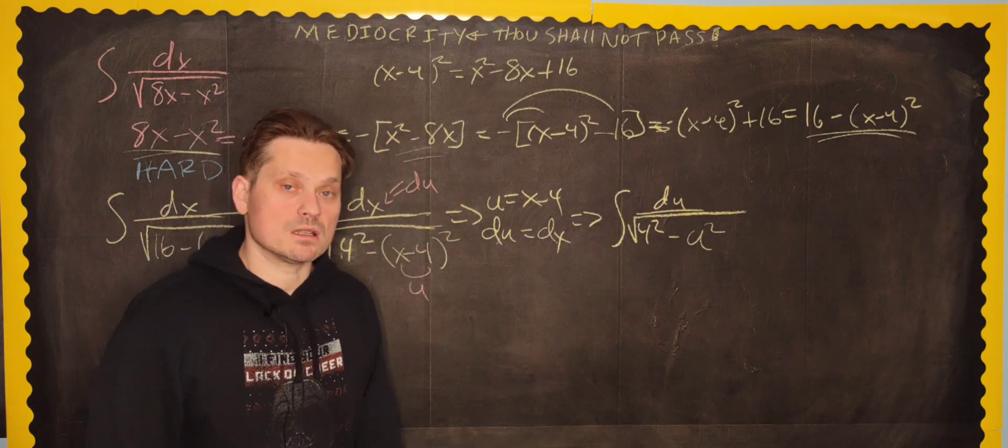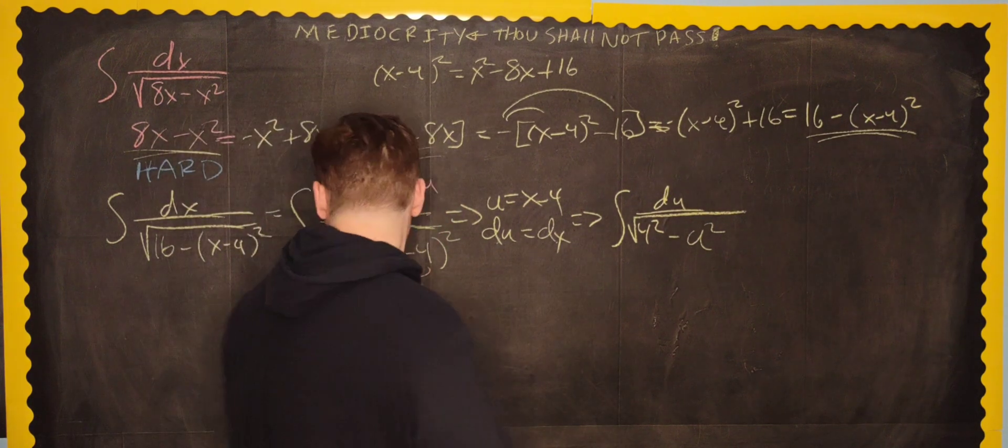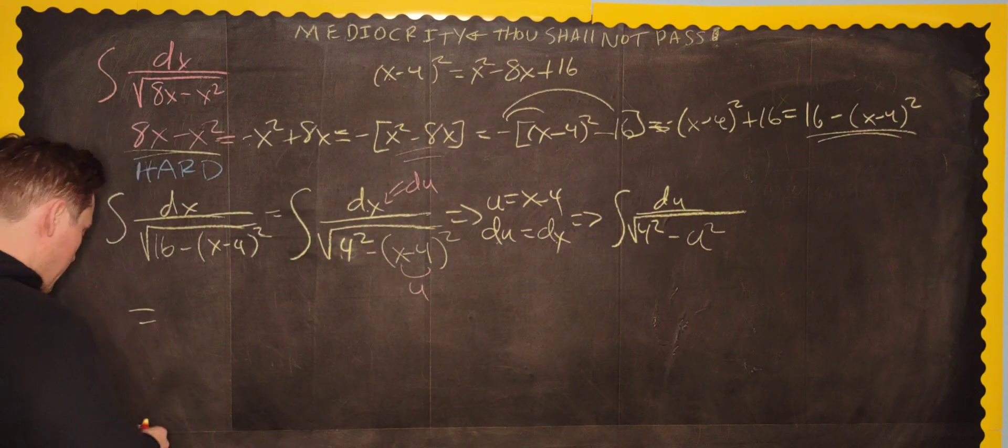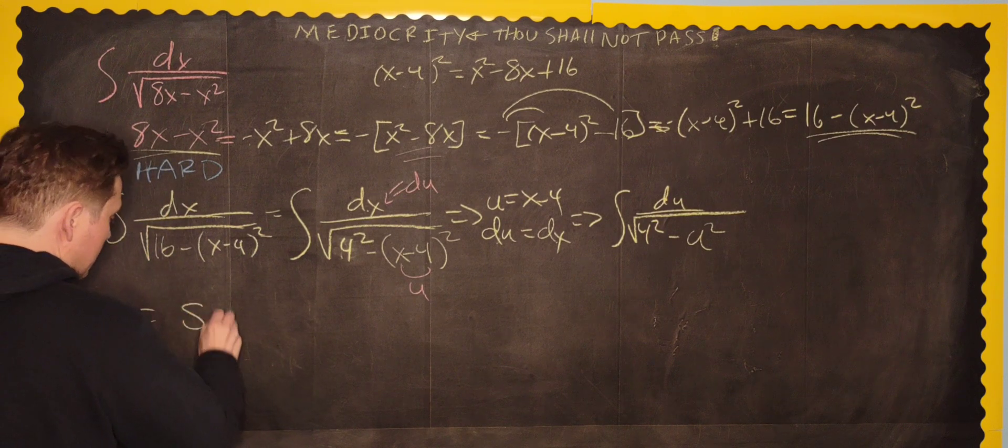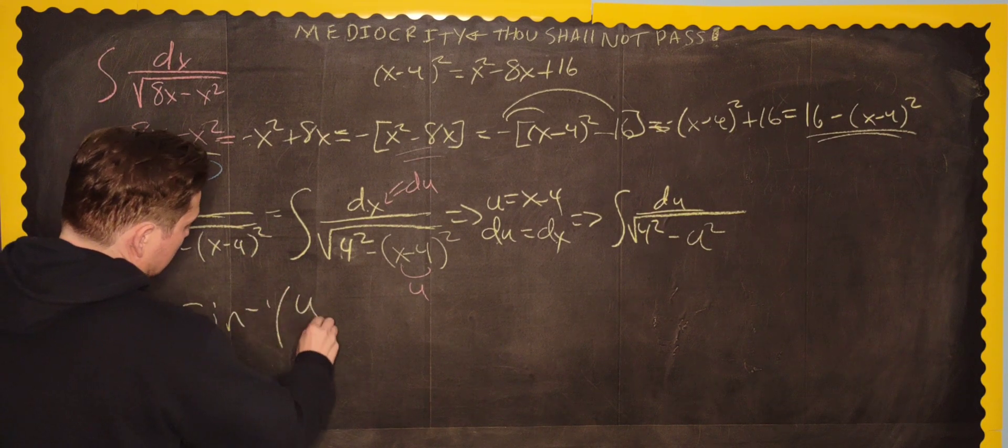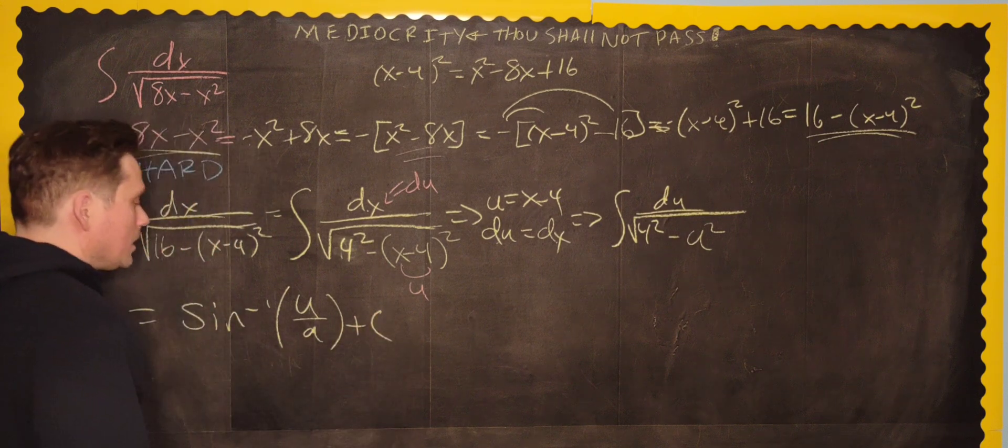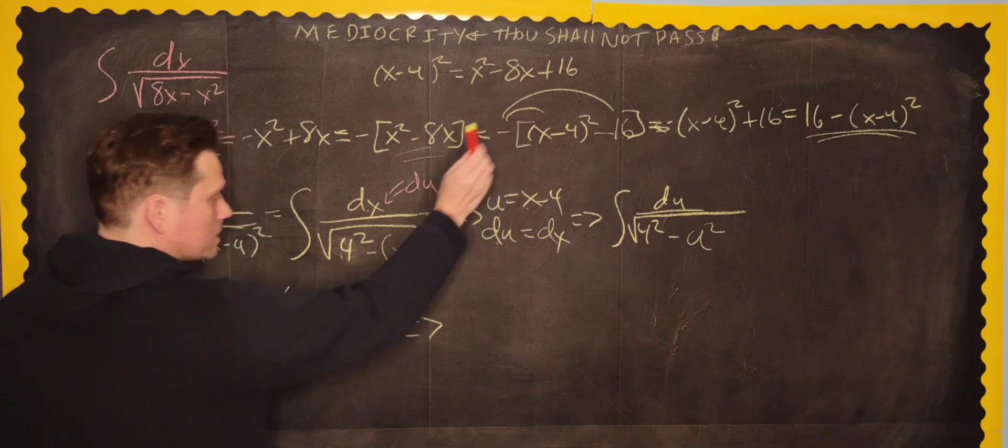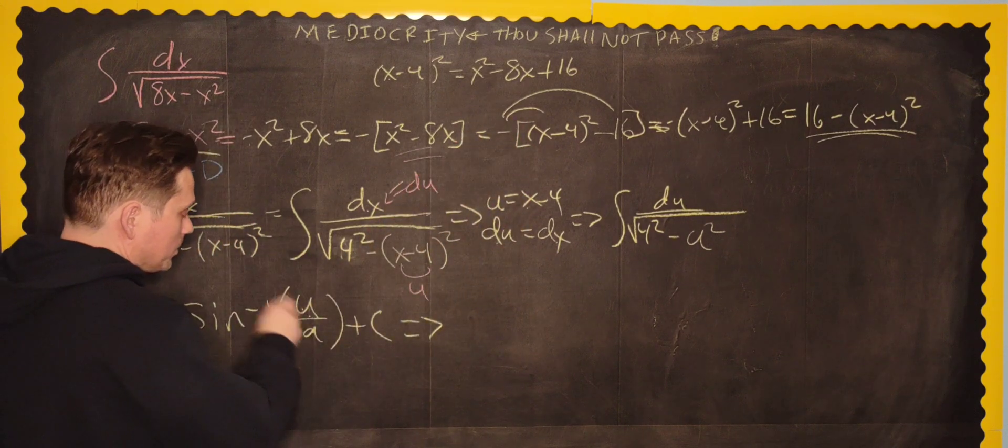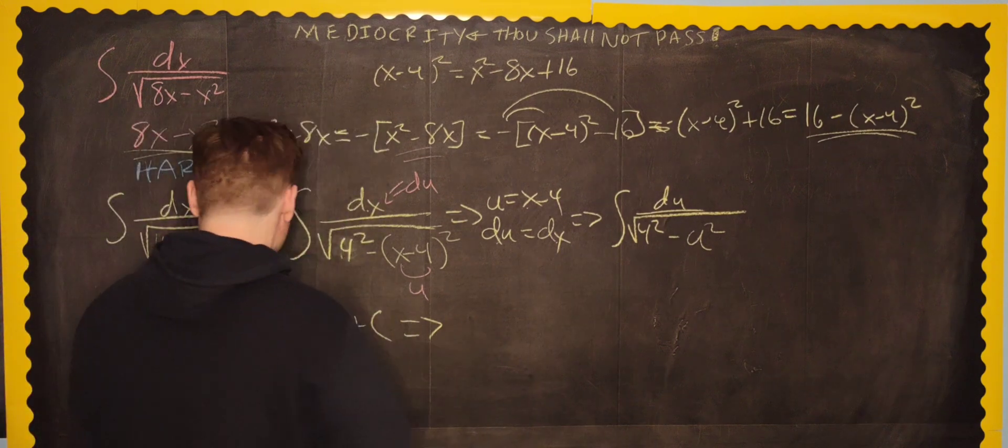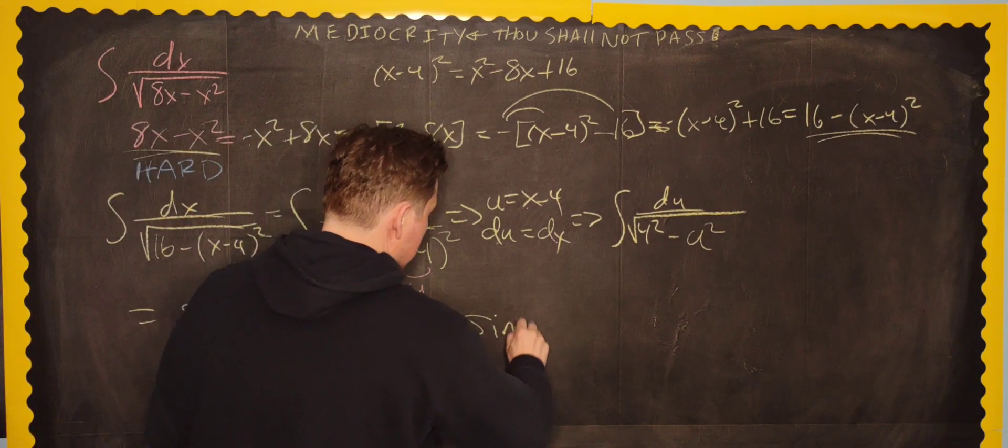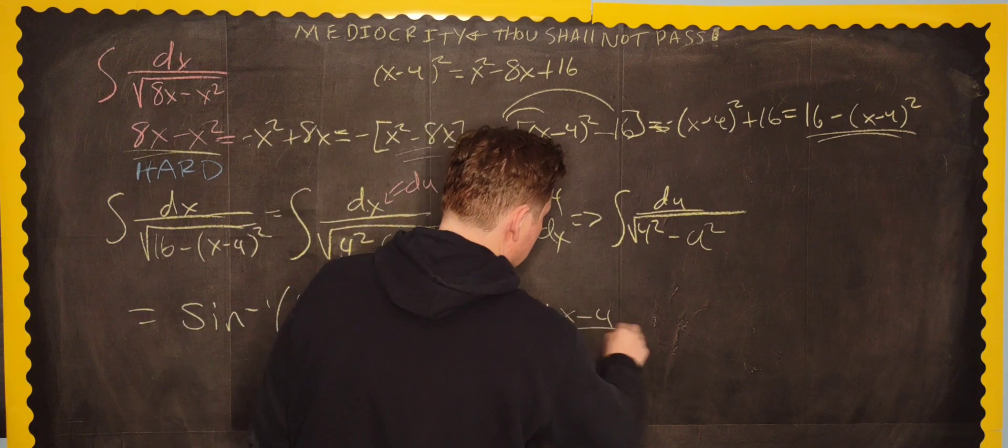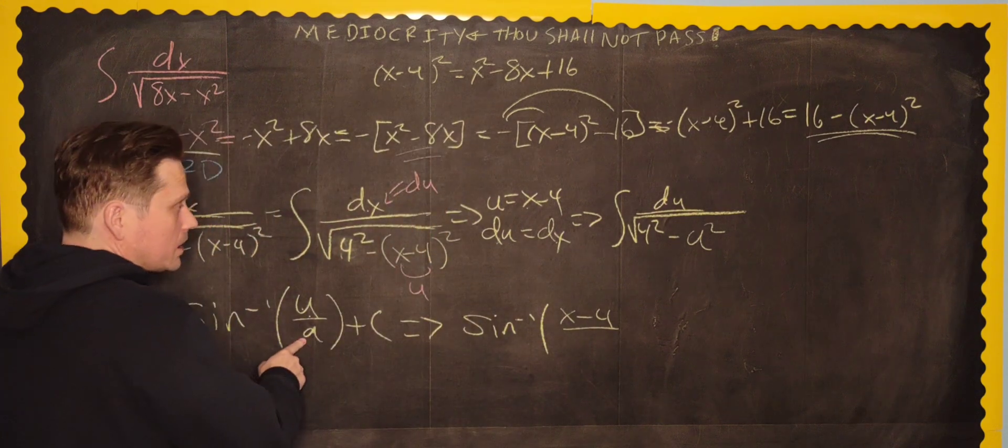This conforms to our well-known anti-differentiation formula. So I'm going to write that down below, right here. It's going to look like this once you anti-differentiate. It becomes sine inverse of u over a plus c. However, because this is in terms of u and the original variable is x, you've got to go back to the original variable by replacing u back with x minus 4. So it's going to give us, therefore, sine inverse of x minus 4.